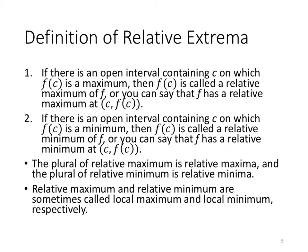Relative extrema: if there's an open interval containing c on which f(c) is a maximum, then f(c) is called the relative maximum of f, or you can say that f has a relative maximum at the point (c, f(c)). If there's an open interval containing c on which f(c) is a minimum, then f(c) is called the relative minimum of f, or you can say f has a relative minimum at the point (c, f(c)). Think of it like a neighborhood — we're not talking about the entire city, just your local area. Someone in your neighborhood might be the richest locally, but not in the whole city — that's the relative maximum. Similarly there might be a minimum in your neighborhood that's different from the minimum of the entire city.